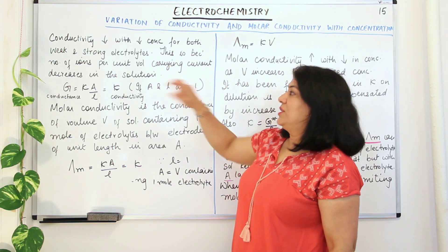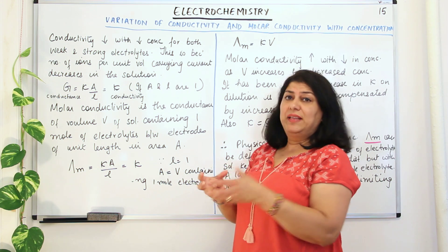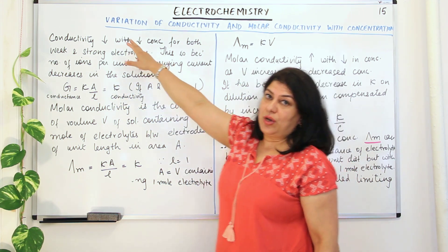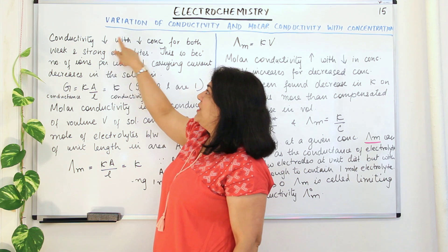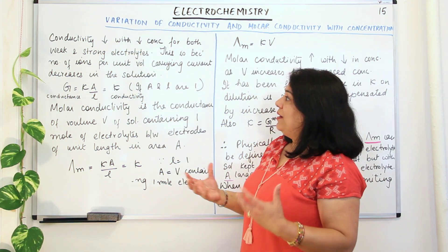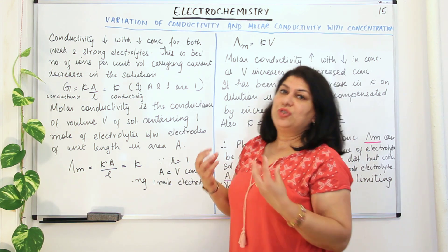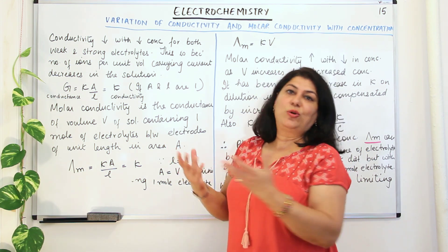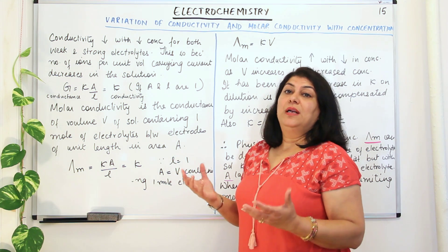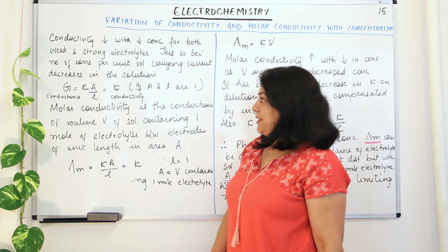Conductivity decreases with a decrease in concentration because the number of ions per unit volume carrying the current decreases. As concentration decreases, the ions present per unit volume also decrease, and fewer ions means less conductivity.